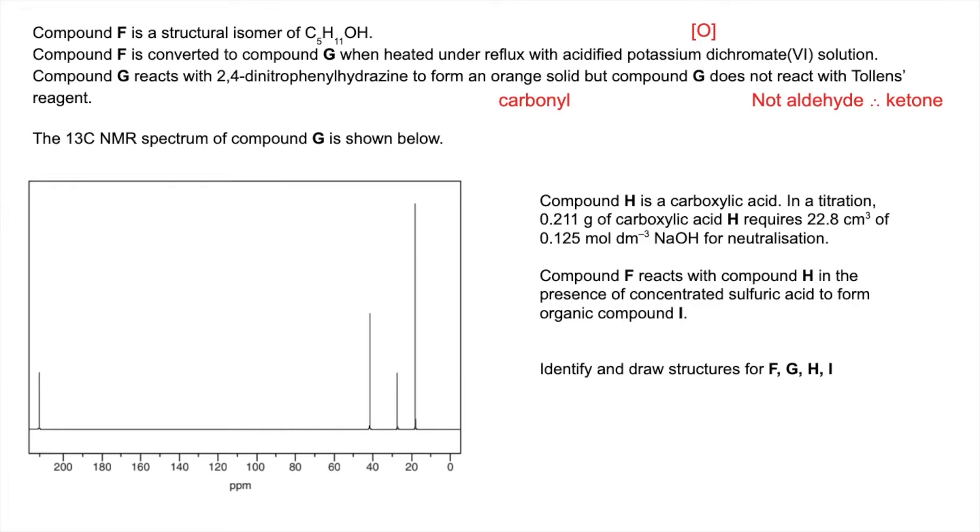So because this was done under reflux, F must be a secondary alcohol. So we're just going to park that for a minute and we'll process the carbon-13 NMR spectrum for G.